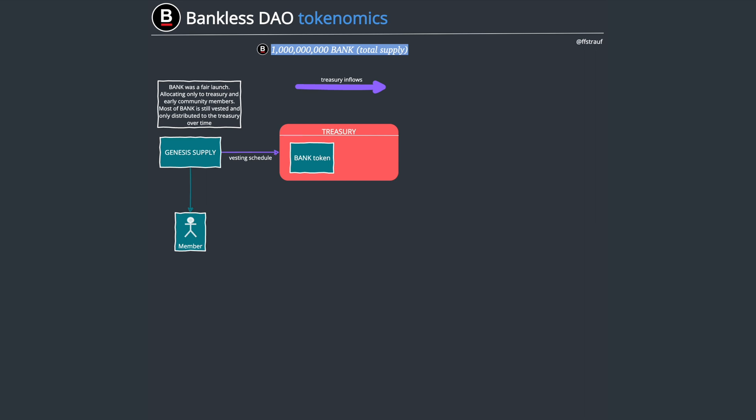These BANK tokens were released in a fair launch — some of them were distributed to the treasury on a vesting schedule, and another part were airdropped to members based on their membership or subscription to the Bankless substack. Then they had a first proposal, once the tokens were distributed, to also give a bunch of tokens to Bankless HQ, and that vote went in favor of distributing those tokens to Bankless HQ.